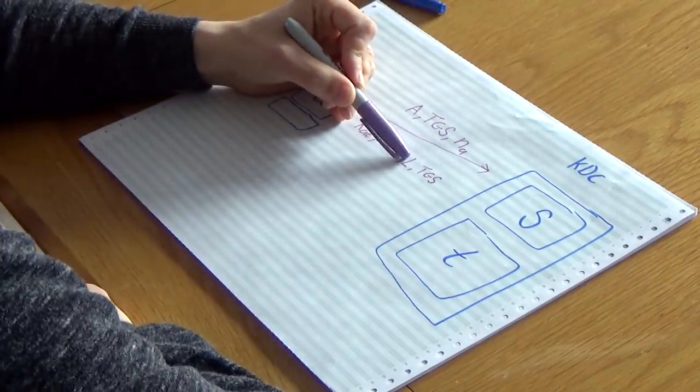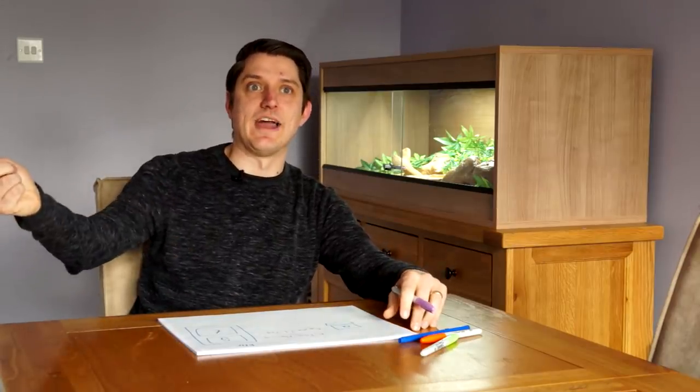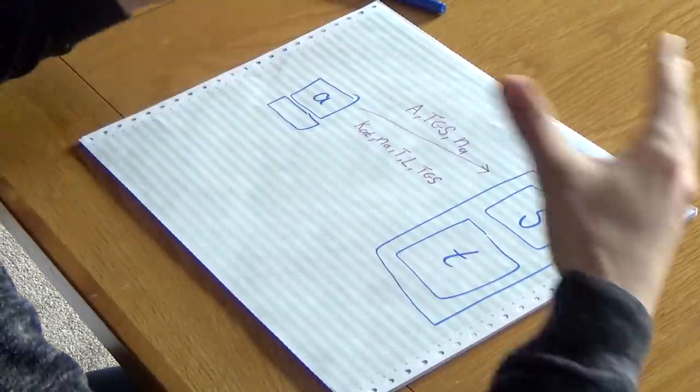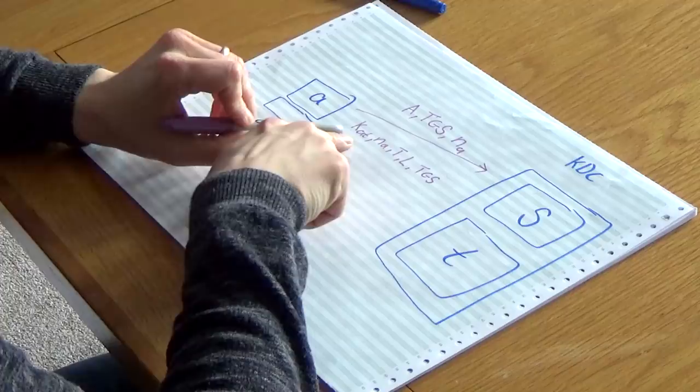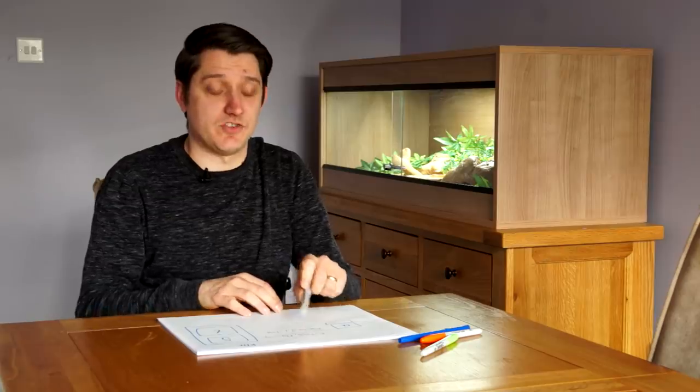So it just has a lot of different parts to this message. The things to bear in mind are, so the time stamp and the lifetime are so that you can't hold on to a ticket for sort of two years and play it again. And we have the names of things in there to make sure everyone knows who it is they're supposed to be talking to. So the important thing in this message is this key, K_AT.